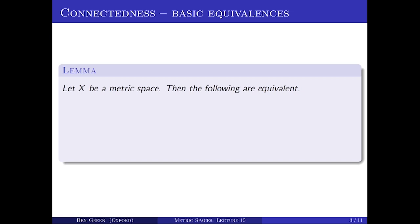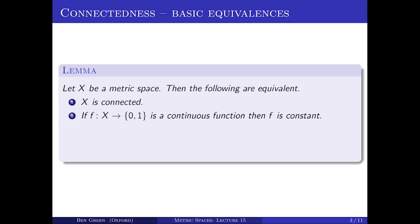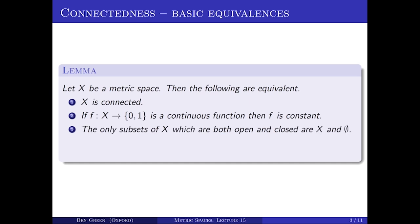Here are three different ways of expressing what it means for a space to be connected. Let X be a metric space. The following three statements are equivalent: first, that X is connected; second, that any continuous map from X to the two-point space {0,1} is constant; and third, that the only subsets of X which are both open and closed are the whole space X and the empty set.